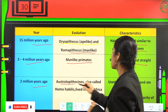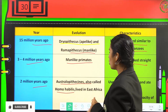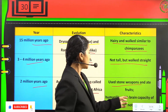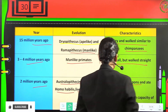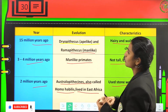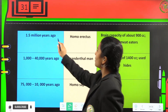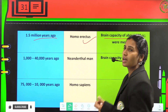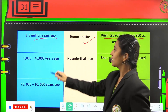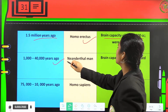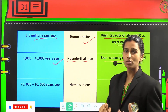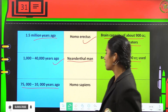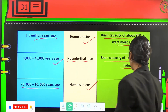Two million years ago, Australopithecus, also called Homo habilis, lived in East Africa. They used stone weapons, ate fruits, and had a brain capacity of 650 to 800 cc but were not fully developed. 1.5 million years ago, Homo erectus appeared with a brain capacity of about 900 cc and was a meat eater. From 1000,000 to 40,000 years ago, Neanderthal man appeared with a brain capacity of 1400 cc and used hides.